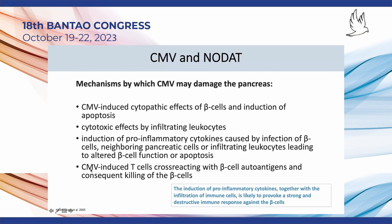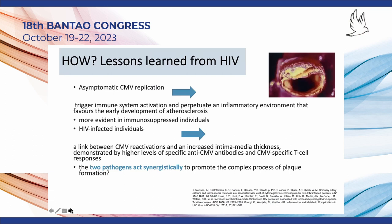The induction of pro-inflammatory cytokines together with infiltration of immune cells is considered to be the main pathway that provokes a strong and destructive immune response against the beta cells, leading to their destruction. Additional lessons can be learned from infection with HIV, because asymptomatic CMV replication may trigger immune system activation and may perpetuate an inflammatory environment.